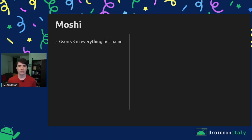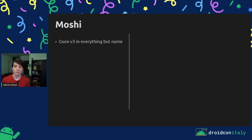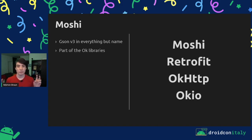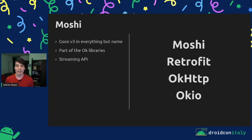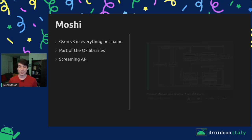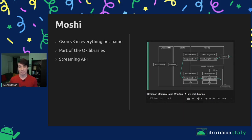Moshi has been described as Gson v3 in everything but name — I'm stealing this description from a Reddit comment by Jake Wharton. Moshi really aims to improve on things that Gson didn't quite get right, while at the same time feeling familiar to anyone who's used Gson before, making it easy to migrate. Moshi is part of the OK group of libraries by Square — things like OKIO, OKHttp, and Retrofit. Moshi also has a streaming API; you can do streaming parsing using Moshi and custom adapters. All of these libraries work very efficiently together, sharing buffers under the hood. There's an entire talk about this by Jake Wharton from more than five years ago that describes all of this in great detail.